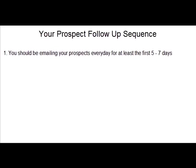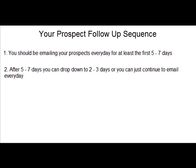So tip one is to make sure that you email every day for at least the first five to seven days. Tip two is after five to seven days you can — and this is not something that you have to do — but you can drop down to emailing every two days after the first five to seven days. Then after three to four days of sending emails two days apart, you can drop down to every three days.